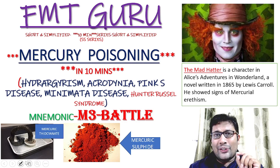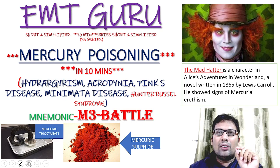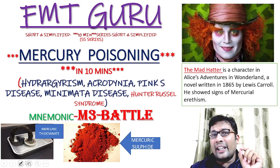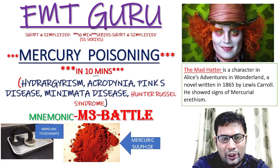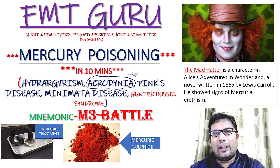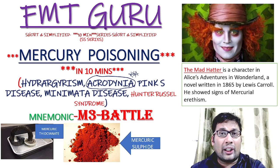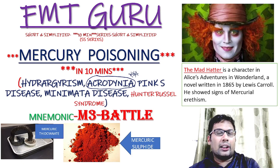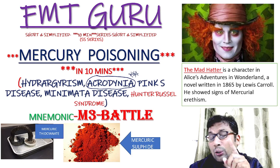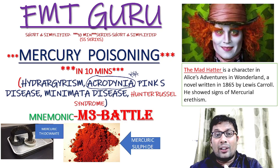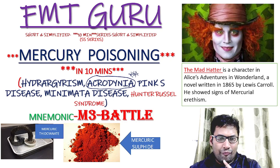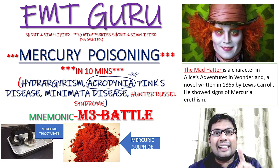Mercury is a heavy metal. Mercury poisoning is also known as hydrargyrism and acrodynia. Acro means periphery, dynia means pain — so acrodynia refers to pain at the periphery caused by mercury. It is also known as Pink's disease, a question commonly asked in exams. It is also known as Minamata disease and Hunter-Russell syndrome.